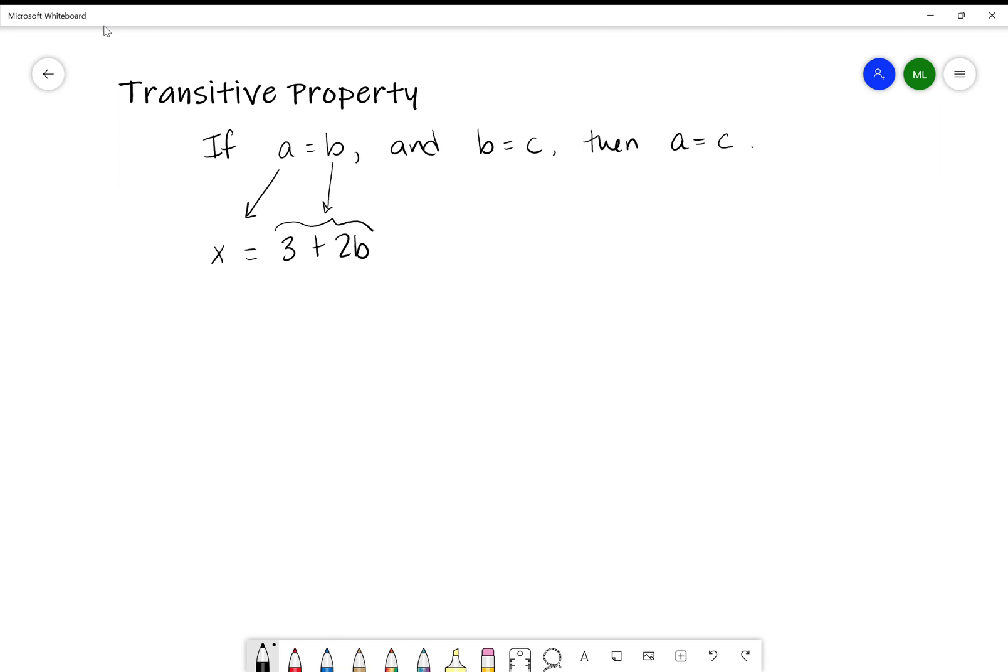But this b, this tends to happen a lot in math rules, this b is actually representative of this whole thing, and this b down here is actually like a totally other b altogether. So this b is an expression. This b expression is equal to 3 plus 2b, and this b down here is a totally new b altogether. So this is x equals 3 plus 2b.